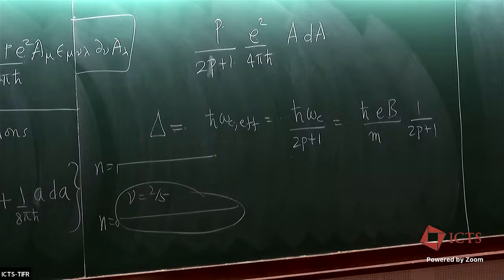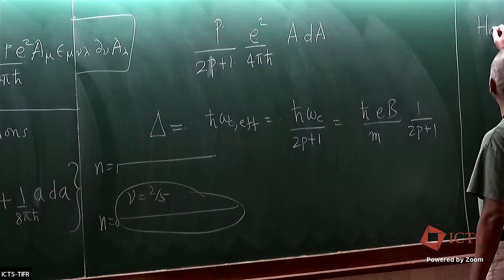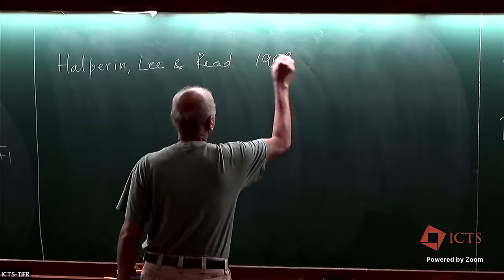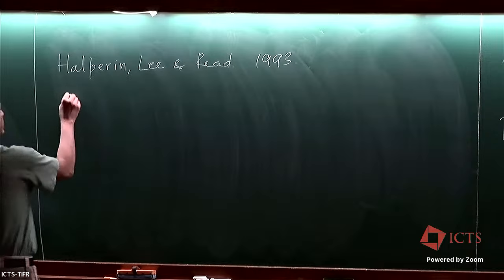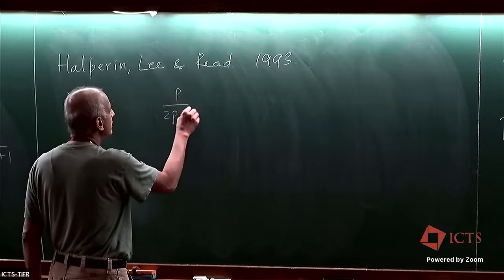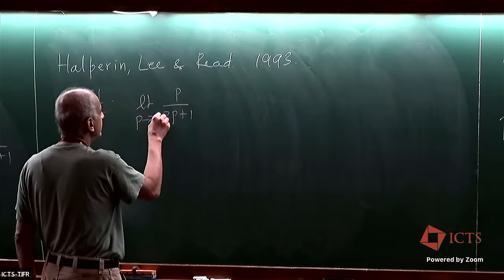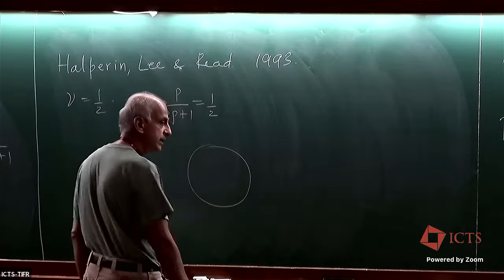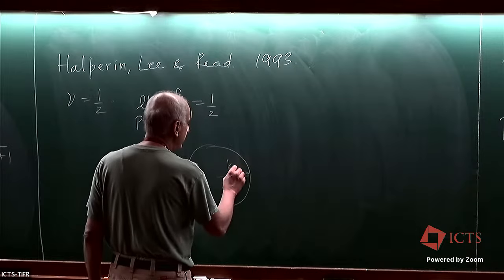The last topic is the famous work of Halperin, Lee, and Read (HLR) from 1993. They took the case ν = 1/2, which corresponds to p → ∞ in p/(2p+1). In this case the effective field seen by the Chern-Simons fermions is exactly zero. At mean field, they don't see any field, so they fill a Fermi sea with Fermi wavevector k_F determined by the density.